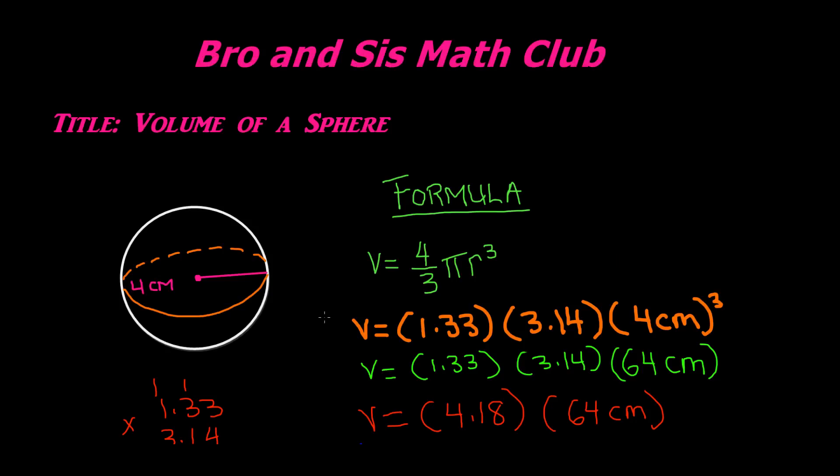And we get 267.52 as the volume, with units of centimeters cubed. So the final volume of this sphere is 267.52 centimeters cubed. Remember, whenever you're finding volume, it has to be cubed. So this is how you find the volume of a sphere. Thank you for watching this video, and we will see you guys in our next video. Bye.